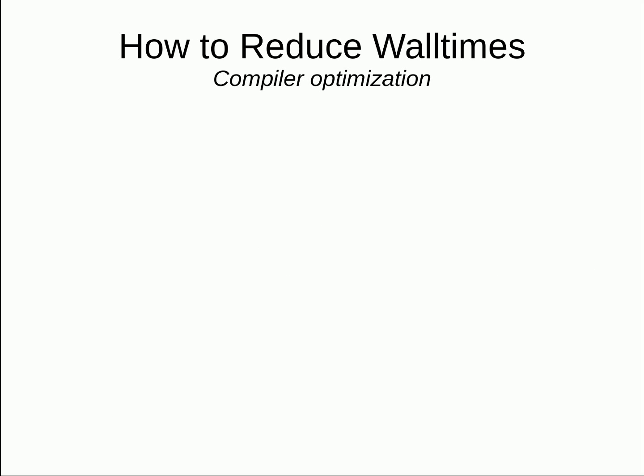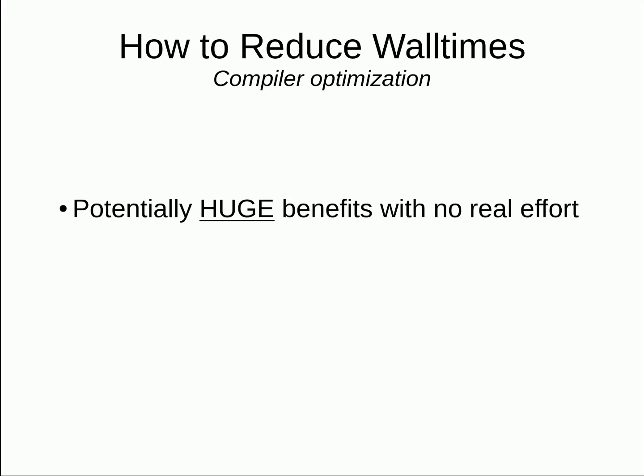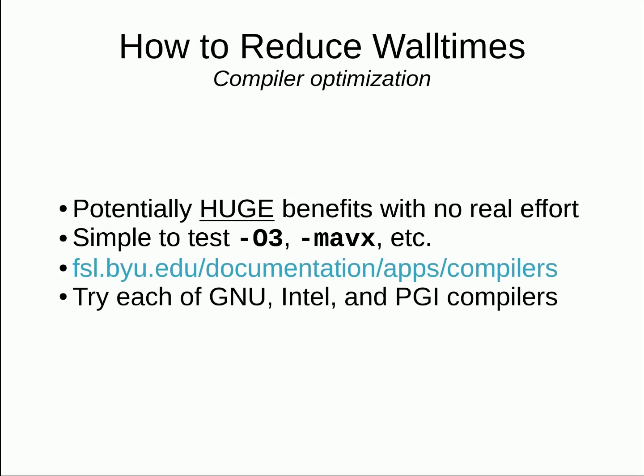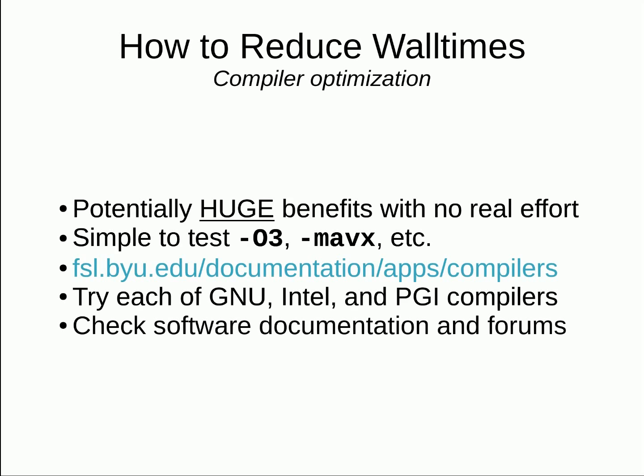This idea is very simple to use. Compiler optimizations can provide massive speedups with little effort on your part. It is very easy to try out different compiler flags that enable various optimizations. BYU's Fulton Supercomputing Lab maintains a list of recommended compiler options on its website on the compiler's documentation page. Try each of the GNU, Intel, and PGI compilers, as well as some of the newer ones. Many of our users find that the Intel compilers are the best optimized for their use case. Check the software-specific documentation. Hopefully the authors have already provided documentation about which options work best. One warning: don't enable unsafe math optimizations or other options that the documentation says are unsafe, unless you know that it is safe to do so in your code, as this may result in incorrect results.